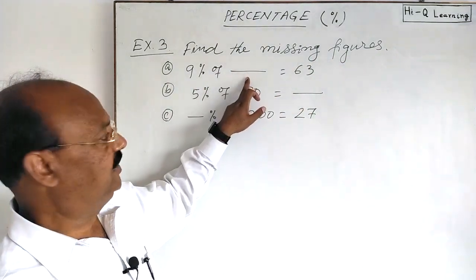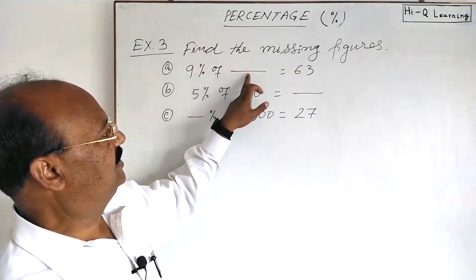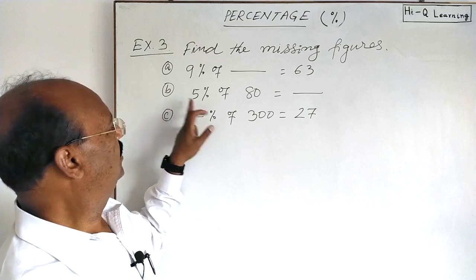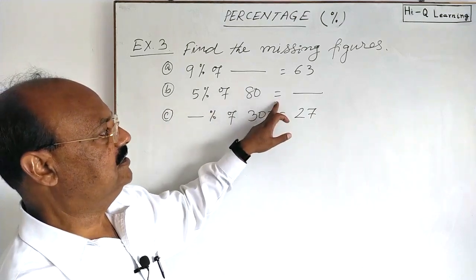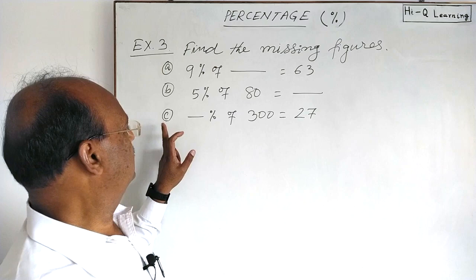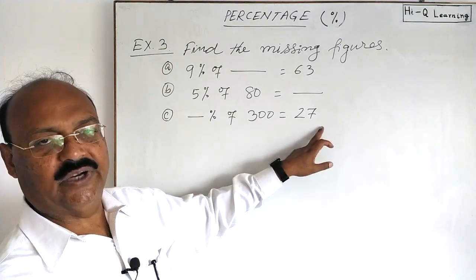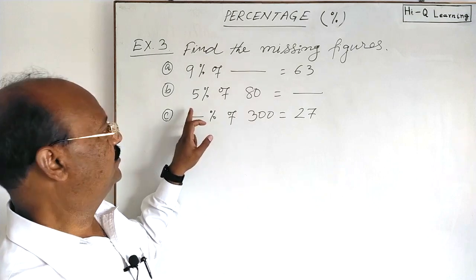Question a: 9% of the missing figure is 63. Question b: 5% of 80 is how much? The figure is missing. Question c: what percent of 300 is 27? Here this figure is missing.